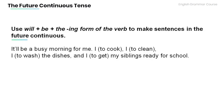Now let's review and practice a bit. Remember that we use will plus be plus the ing form of the verb to make sentences in the future continuous. Now read the following sentence and provide the future continuous form of the words in the bracket.